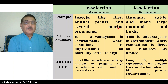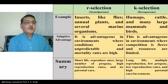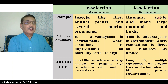Several marine organisms also show R selection. For K selection, one can cite the example of humans, which survive for 70, 80, 90, even 100 years of life, but produce just a few progeny. There are also cattle, many large mammals, and even birds which show K selection.